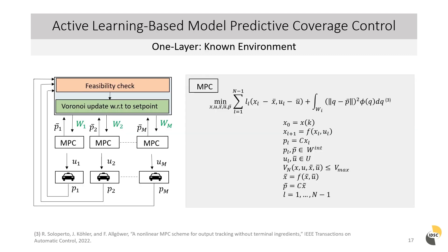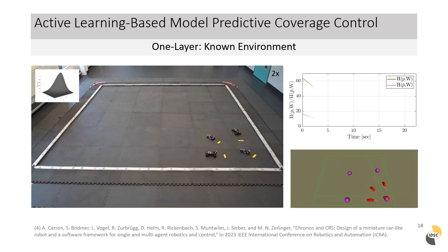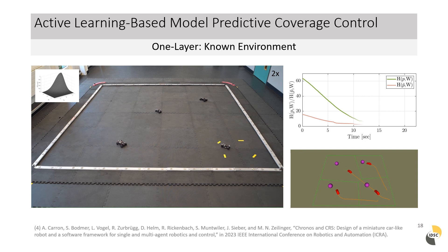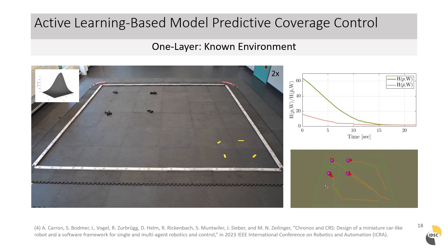For the second algorithm, we overcome the hierarchical structure and integrate the calculation of an optimal position within a partition directly into the cost of each agent's MPC, making a cost-decrease check before the partition update redundant. Applying our one-layer algorithm shows that its runtime partition update, as well as the decrease of the locational optimization cost, is comparable to its two-layer counterpart.